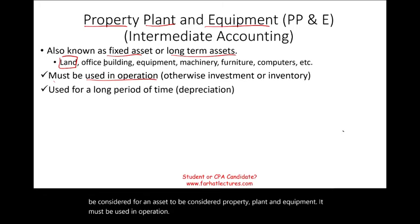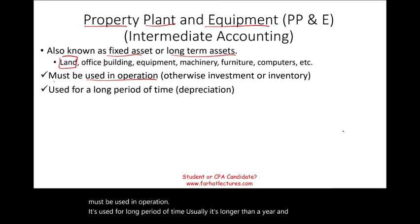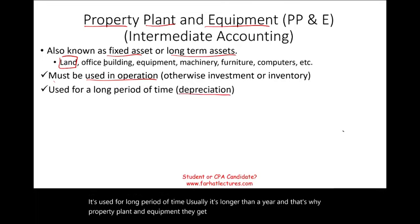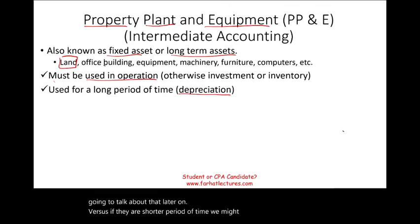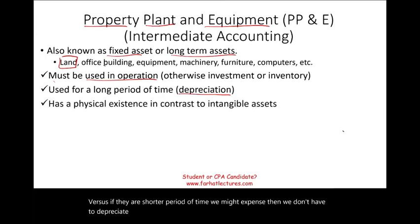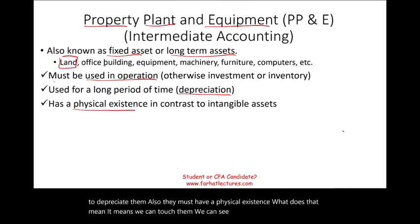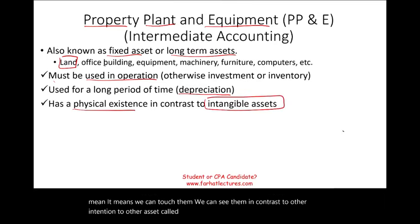The second characteristic is that the asset is used for a long period of time — usually longer than a year. That's why property, plant, and equipment get depreciated. If the useful life is a shorter period of time, we might expense them instead. Third, they must have a physical existence — we can touch and see them — in contrast to intangible assets, which we'll cover in a separate chapter.